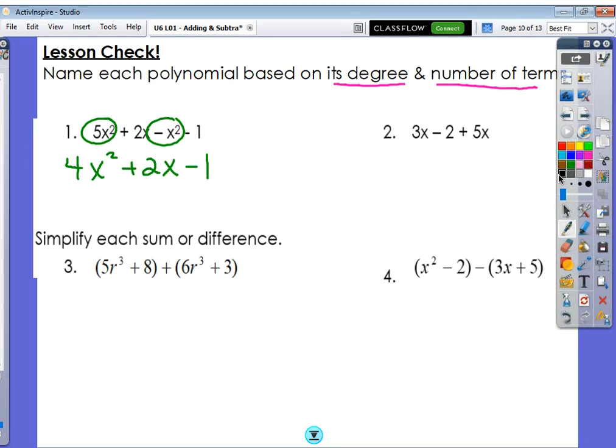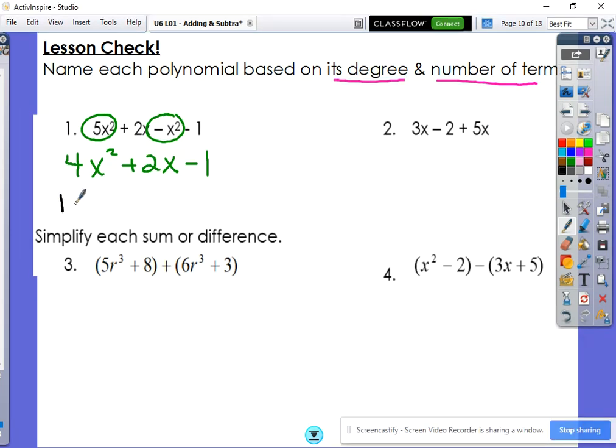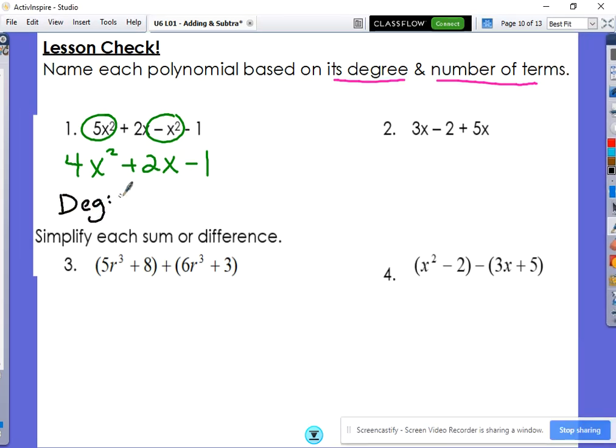Now we can identify the degree and the type of polynomial. Never determine that without before putting it in standard form. So our degree is 2, or the second degree, because that's our highest exponent. And then we are a trinomial, because we have 3 terms.